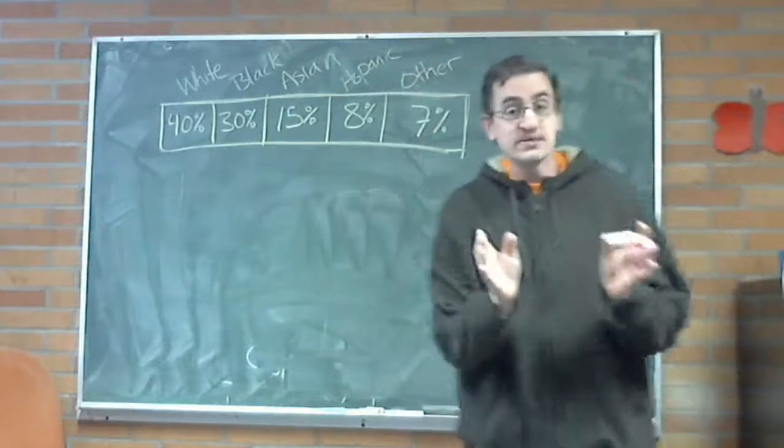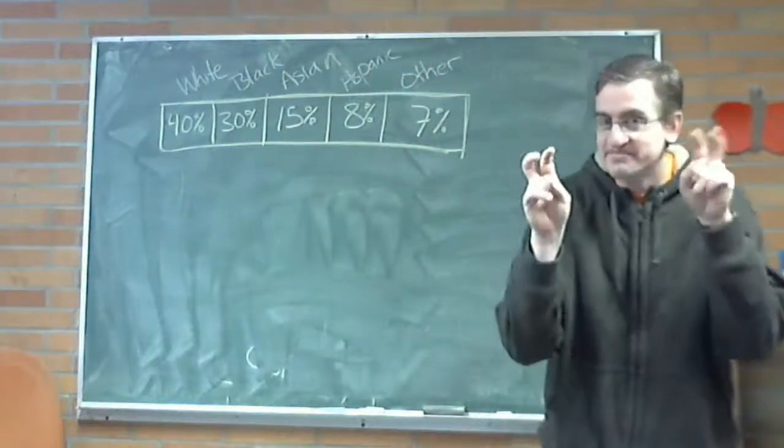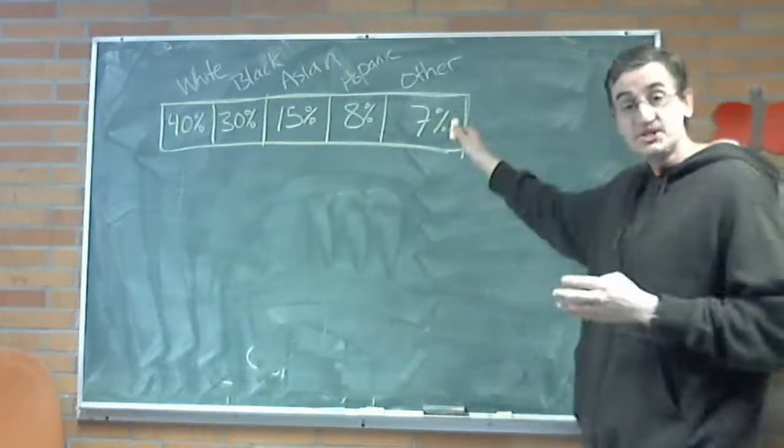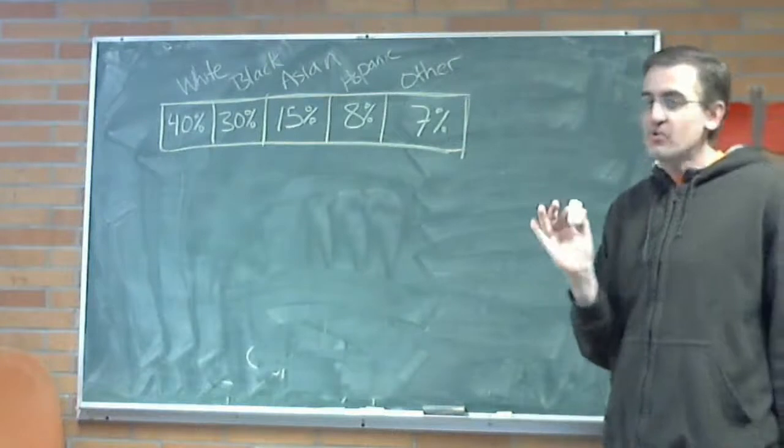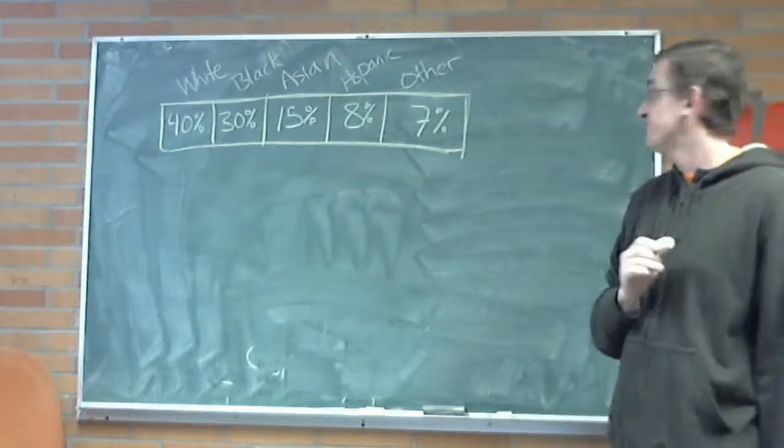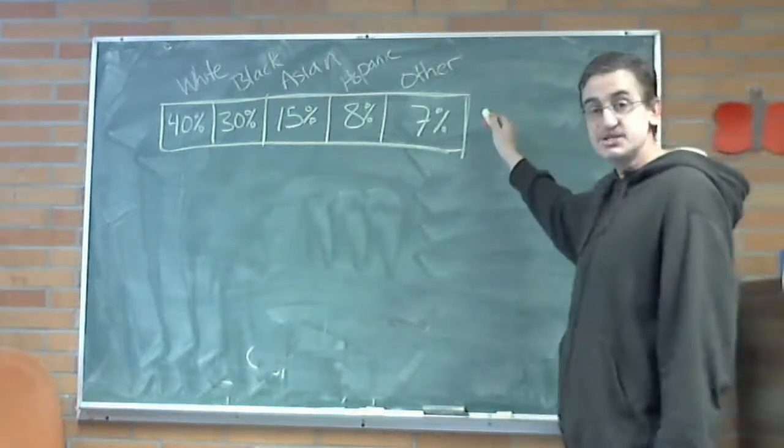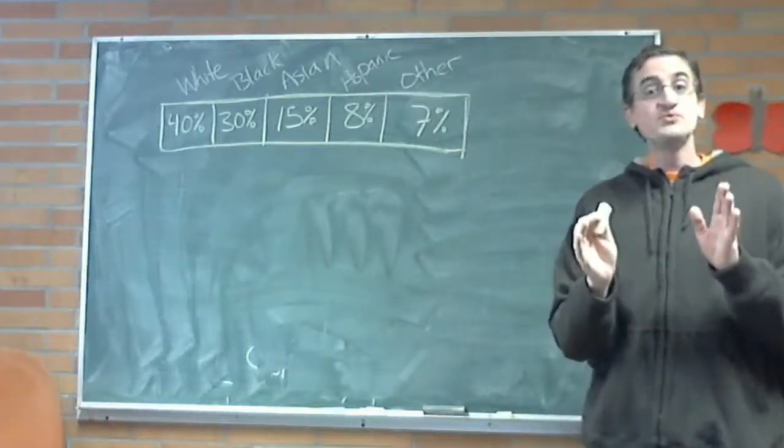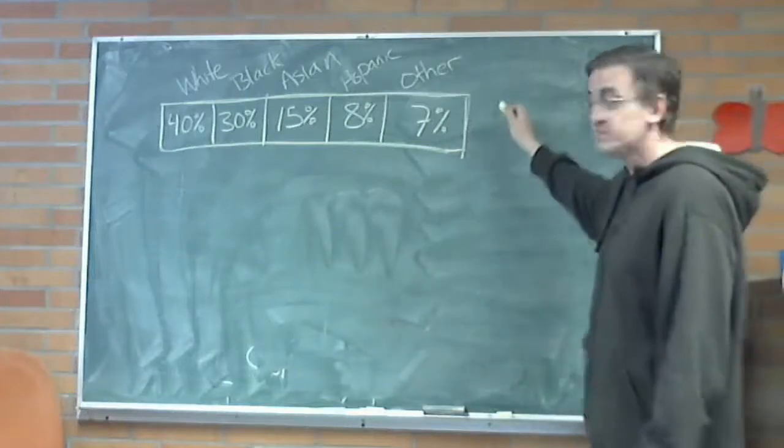Now, TSA will tell you they do these random checks where they just randomly pick someone for a further colonoscopy. And our question is, are they really random or are they targeting certain races? So, these are the percentages that we expect. Now, first thing you need to know is when we are doing a chi-squared test, we don't work with the percentages.